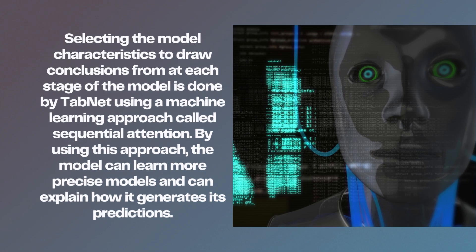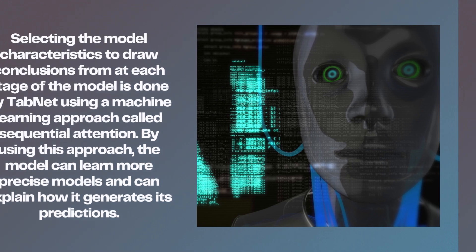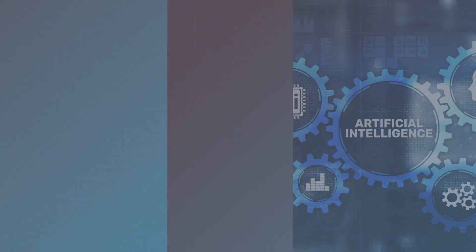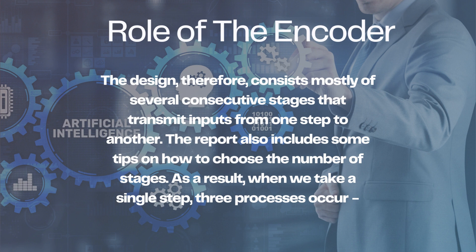Selecting the model characteristics to draw conclusions from at each stage is done by TabNet using a machine learning approach called sequential attention. By using this approach, the model can learn more precise models and can explain how it generates its prediction. In addition to outperforming other neural networks and decision trees, TabNet's architecture also offers feature attributions that are easy to understand. Deep learning for tabular data is made possible by TabNet, which offers great performance and interpretability.